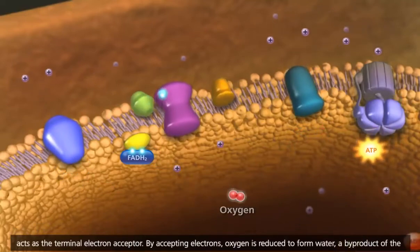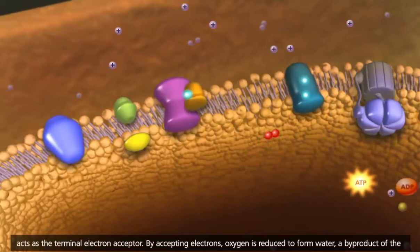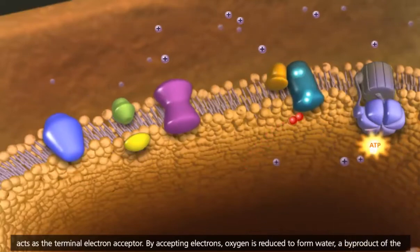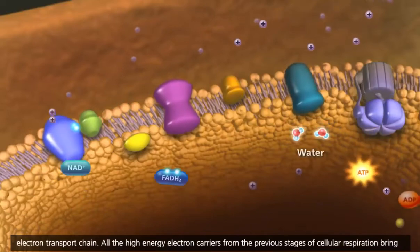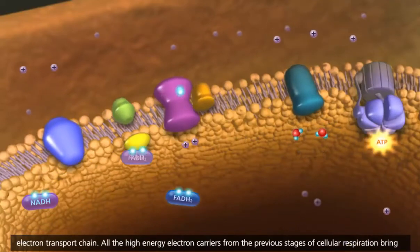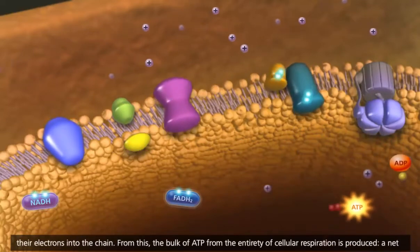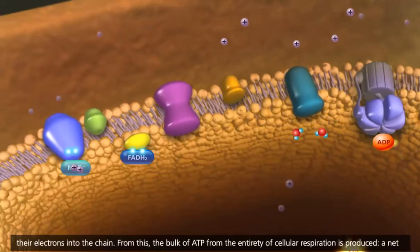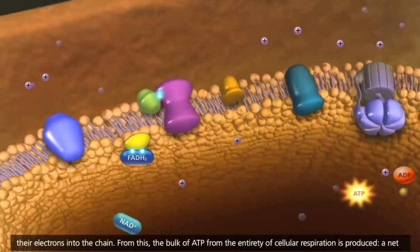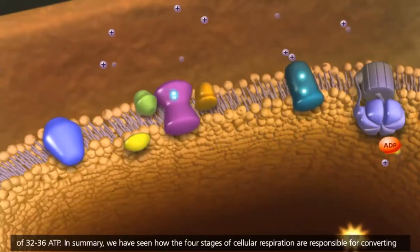Oxygen acts as the terminal electron acceptor. By accepting electrons, oxygen is reduced to form water, a byproduct of the electron transport chain. All the high-energy electron carriers from the previous stages of cellular respiration bring their electrons into the chain. From this, the bulk of ATP from the entirety of cellular respiration is produced, a net of 32 to 36 ATP.